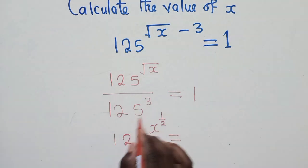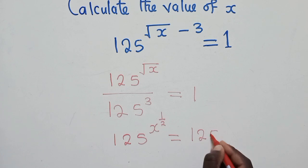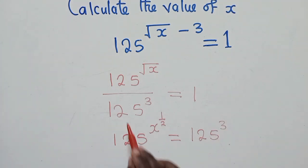Is equal to, you cross multiply here, we have 125 power 3. So when you cross multiply 125 power 3 times 1, it will be what we have here.